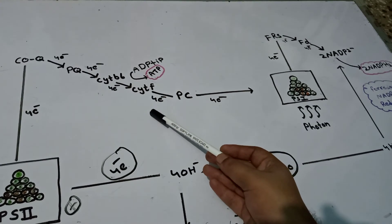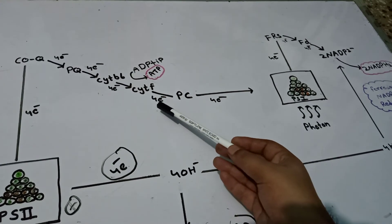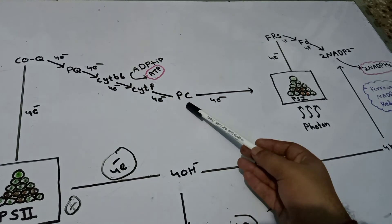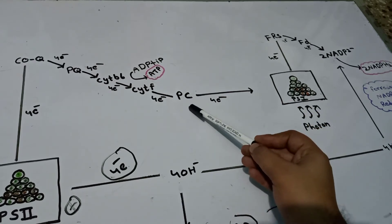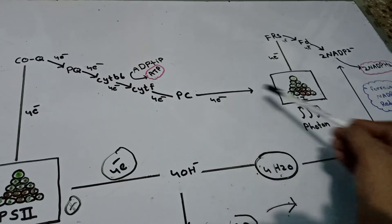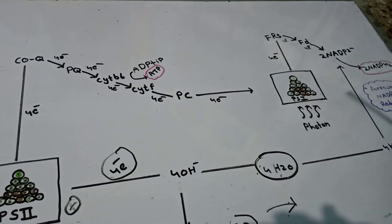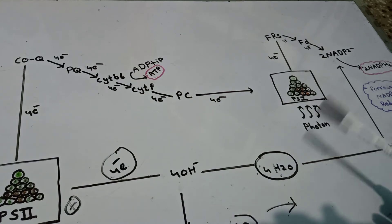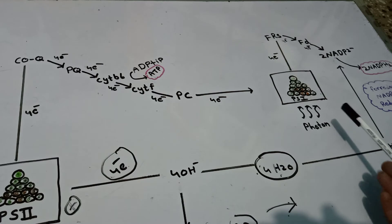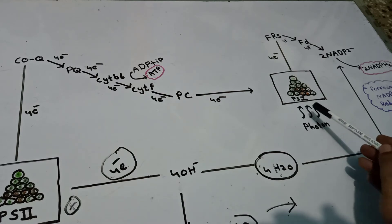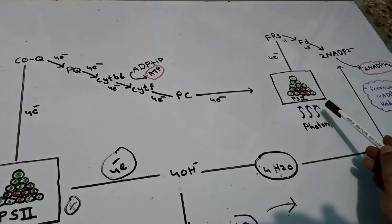The electron from Cytochrome F is transferred to Plastocyanin, and from Plastocyanin it is transferred to Photosystem 1.